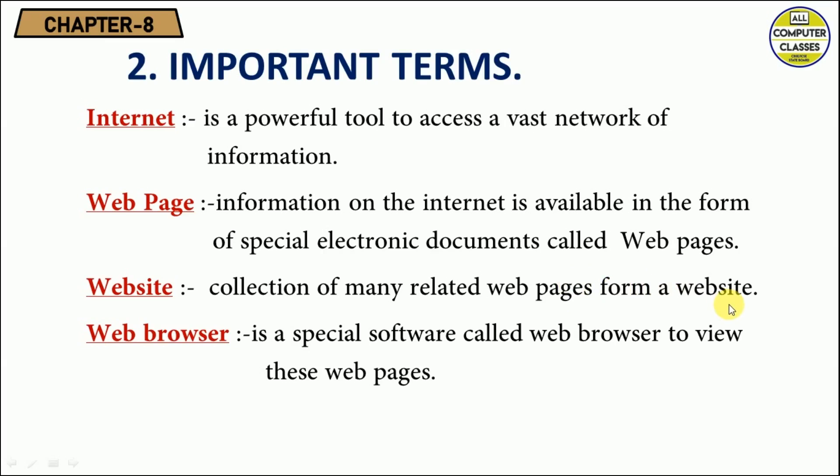For example, when you visit the CBSC website, all the information related to the CBSC board is placed at one place — all the web pages are related to each other in one form or another, and that makes a website. The next term is web browser — it is a special software used to view web pages.